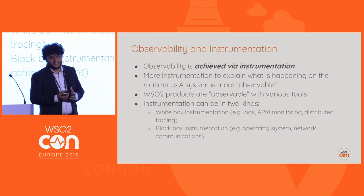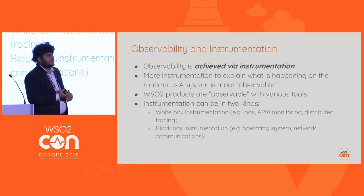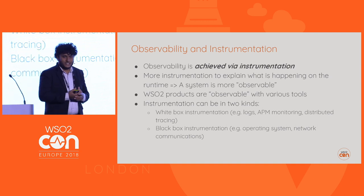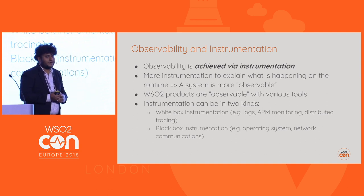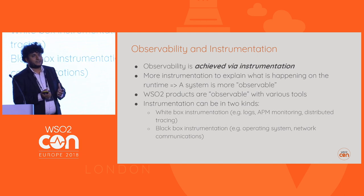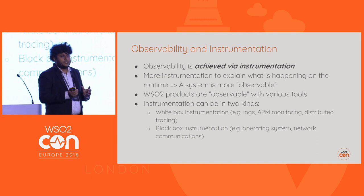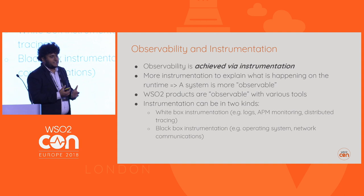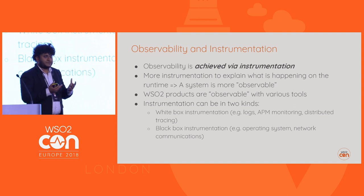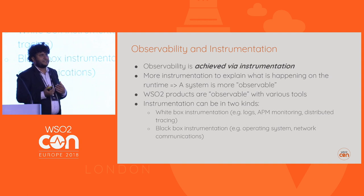Instrumentation can be done in two ways: white box instrumentation and black box instrumentation. White box instrumentation means, from the design of your system, you bake in the functionality to get the information you need — like logging, JVM monitoring, and tracing. Black box instrumentation means looking at a system from a distance and figuring out what's happening, using operating system attributes like CPU, memory, and network usage.